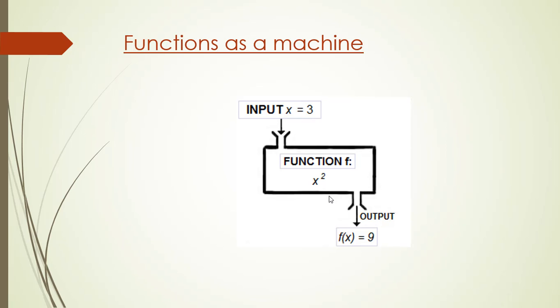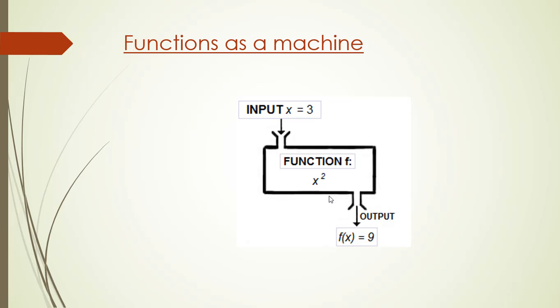If instead the input was 5, the answer would be 5 squared, that is 25. So the key point to take away from here is that for every input given to the machine we get some output. The set of all input values which are given to the function is called domain and the set of output values is called the range.